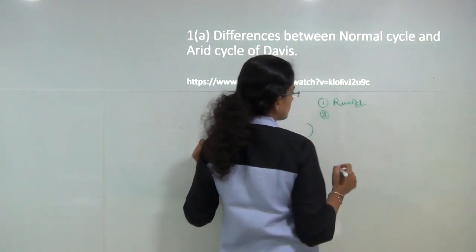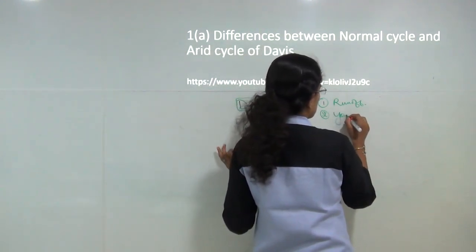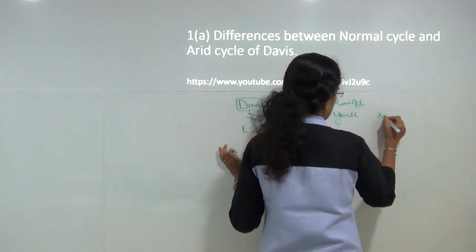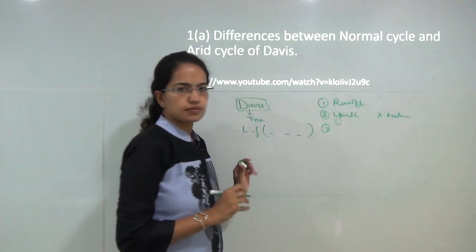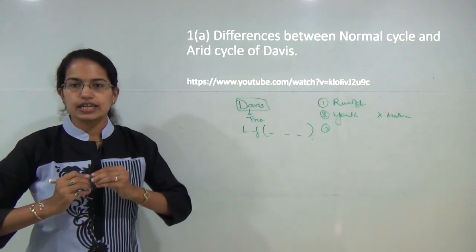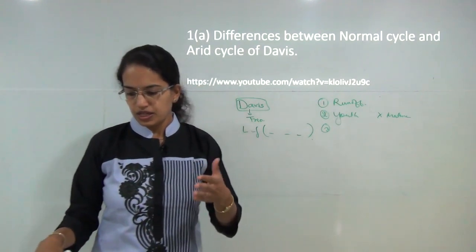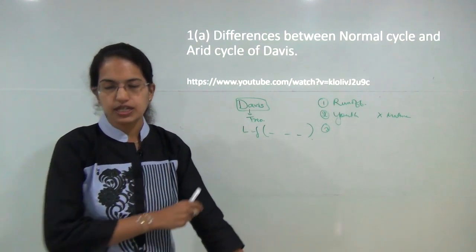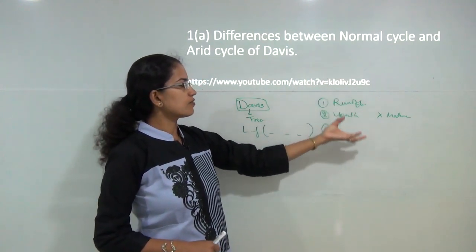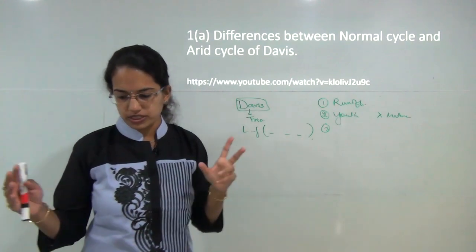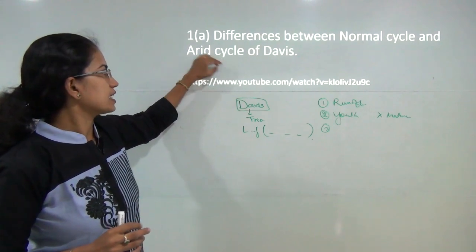The formation of relief features is more pronounced in the youth stage compared to the mature stage. The highlands are actively dissected in the youth stage, and finally the base level is continuously uplifted due to the process of aggradation. These are the fundamental points you must touch while explaining the normal cycle and the arid cycle.